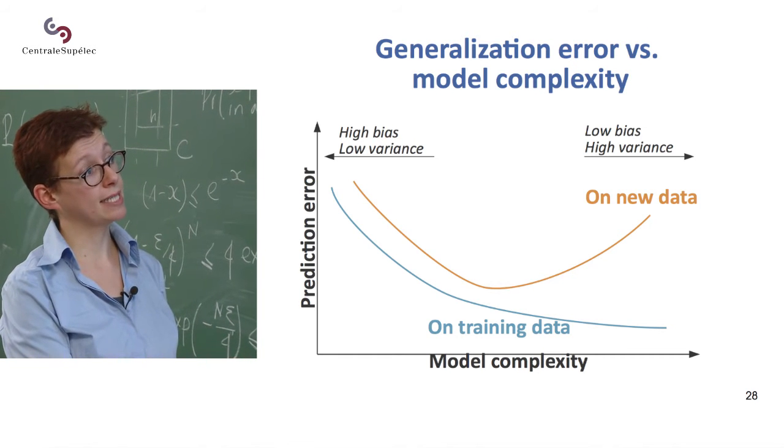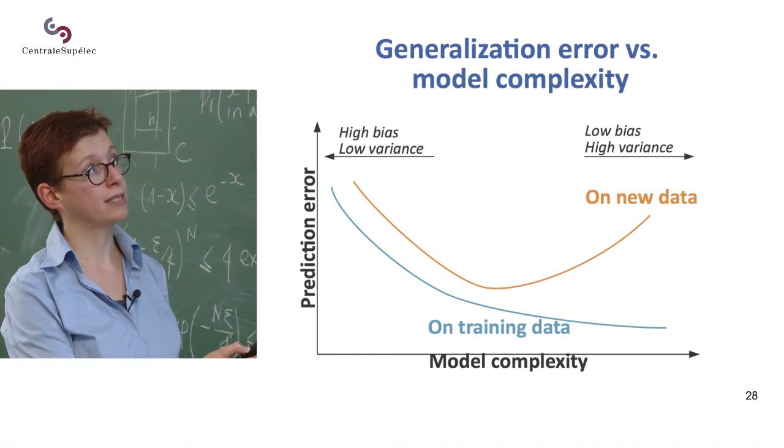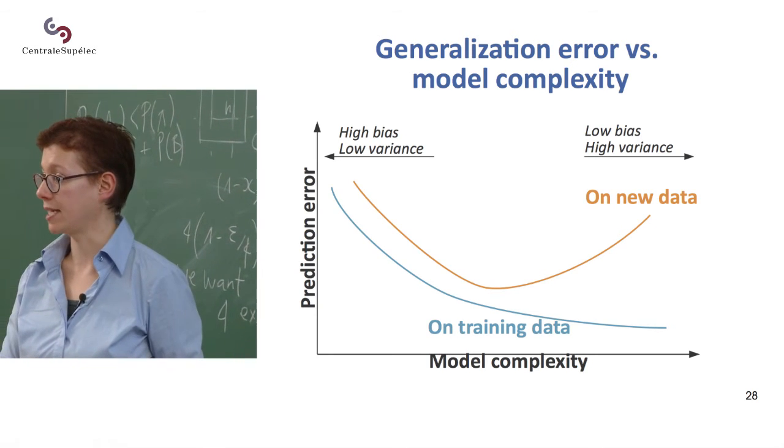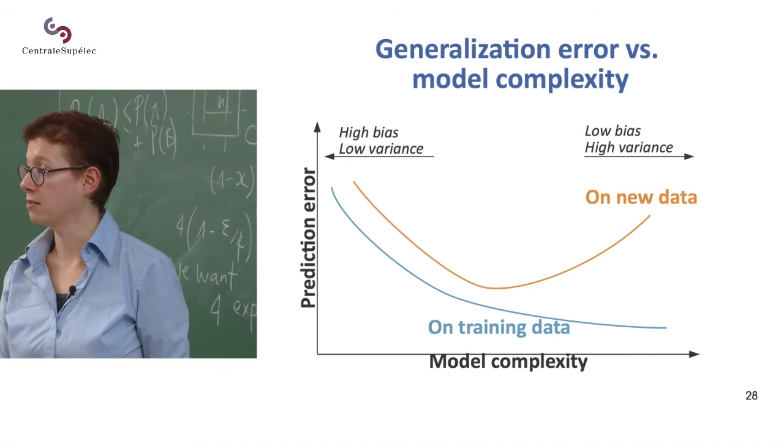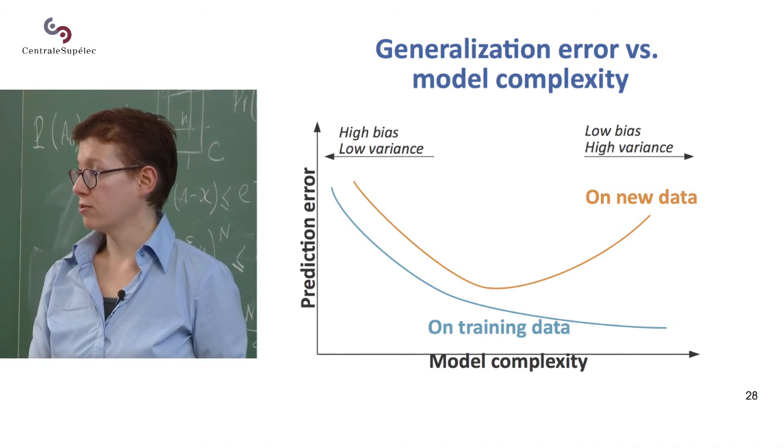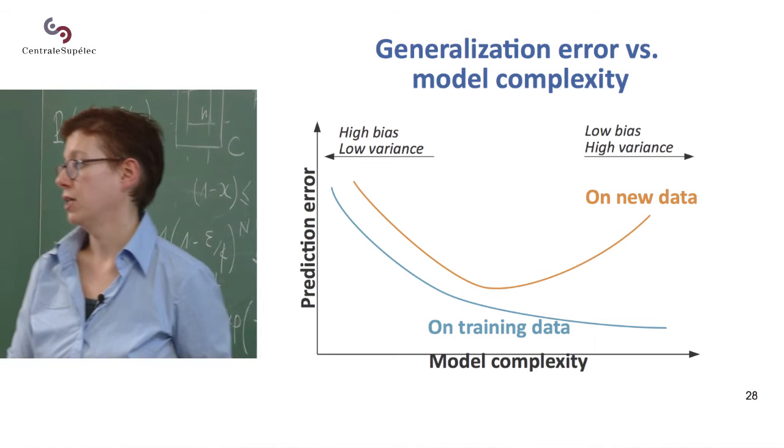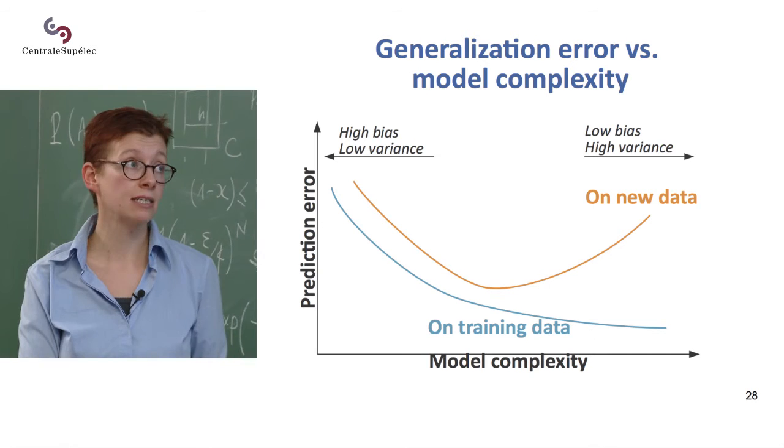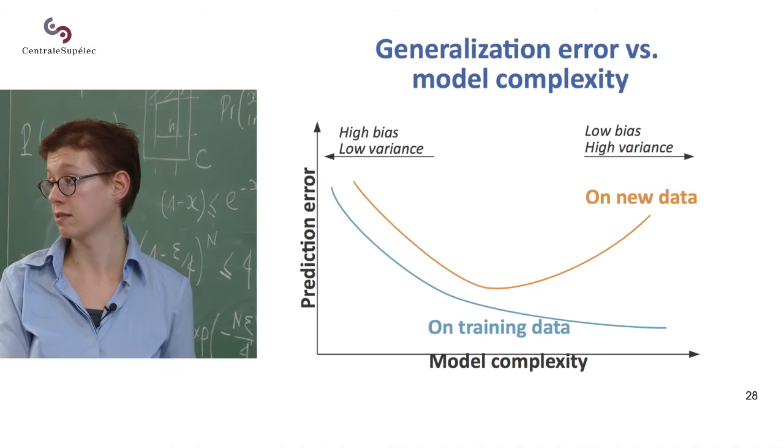On the other hand, on new data, so of course, if you start increasing your model complexity, so you move from a line to a rectangle to explain the data we've been working on at the beginning, the family car data, of course, getting a rectangle is going to lower your error. But then at some point, you'll do things that are more complicated. And when you'll see a new data point, you'll make more and more mistakes about it.